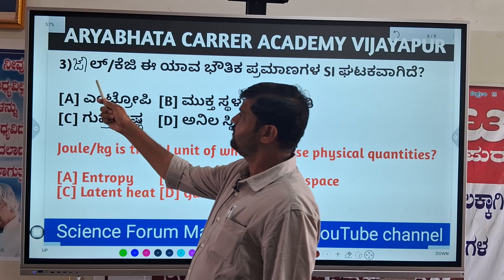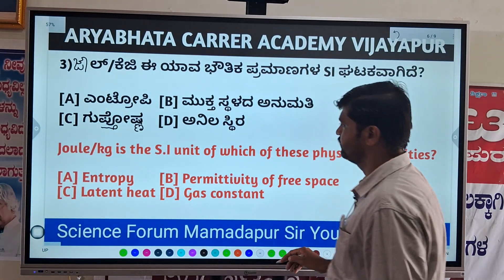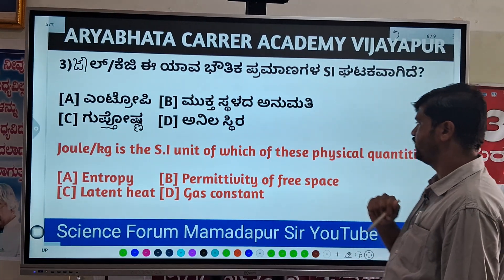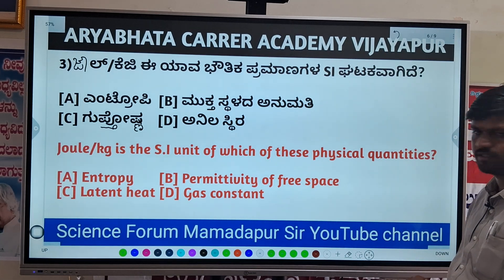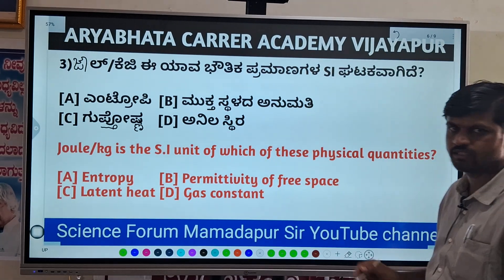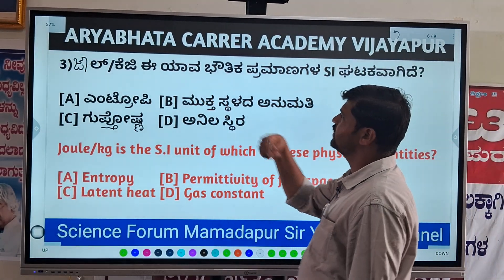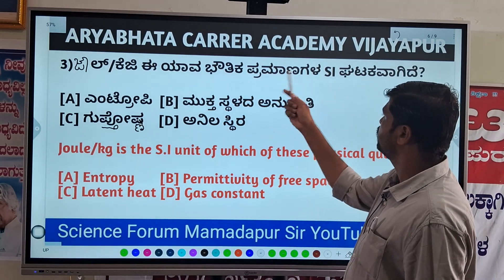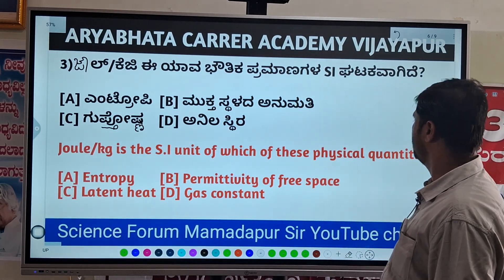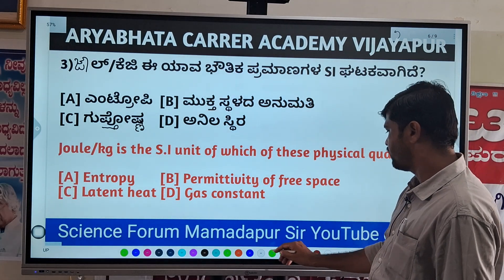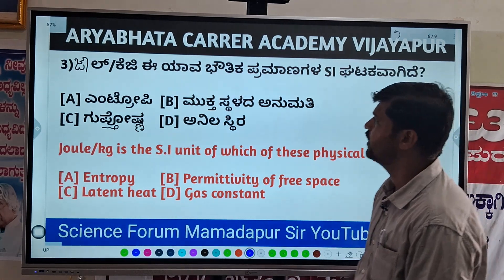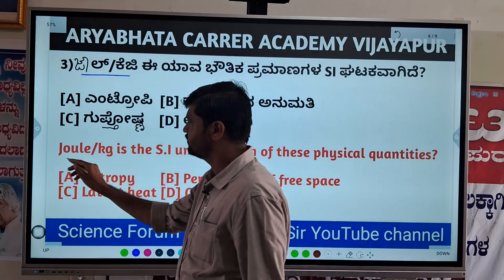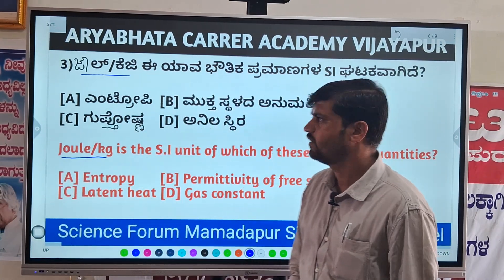The first question is: Joule per kg is the SI unit of which of these physical quantities? This is the question — Joule per kg.